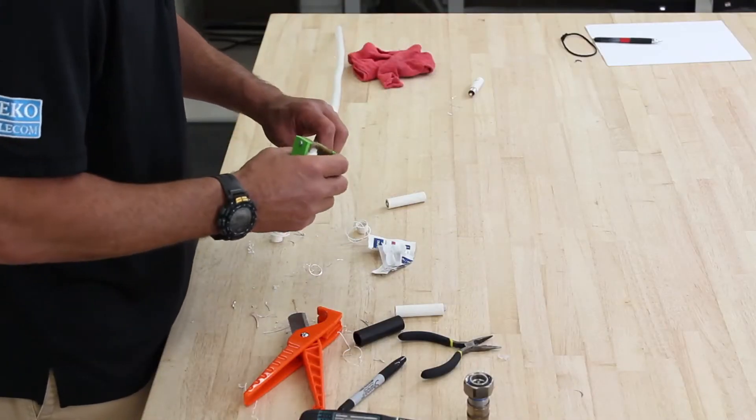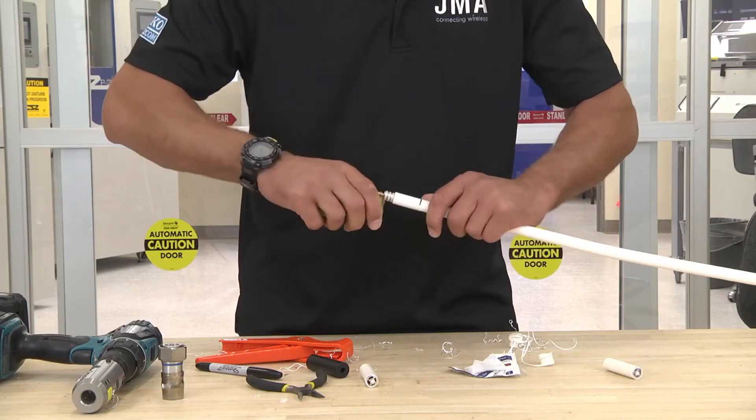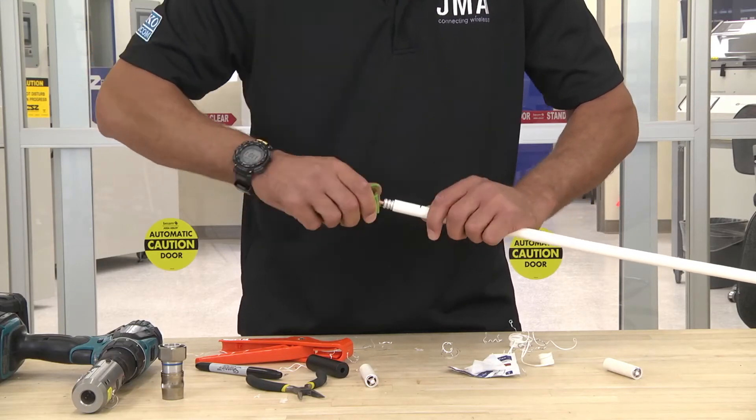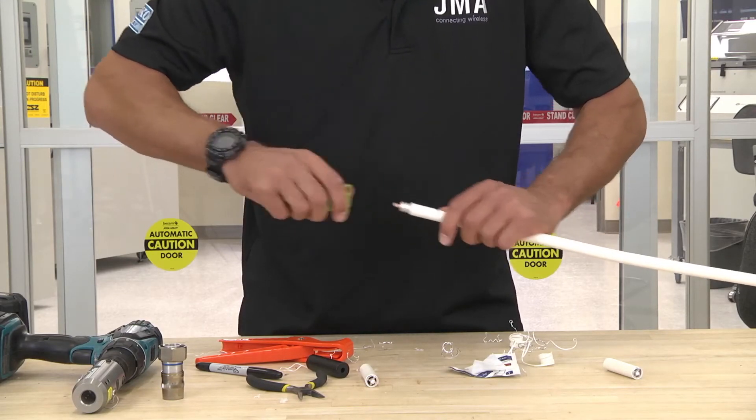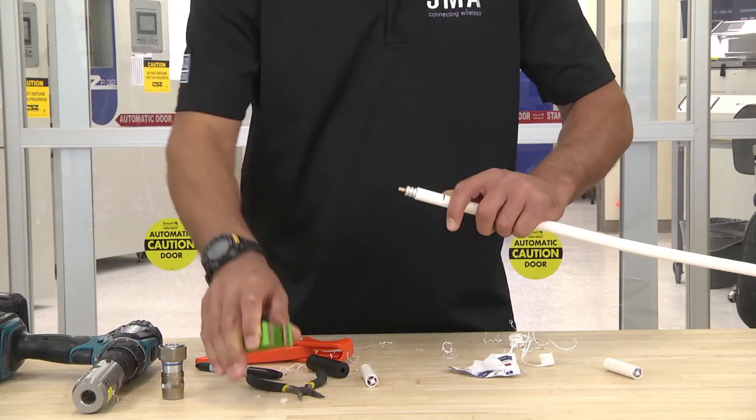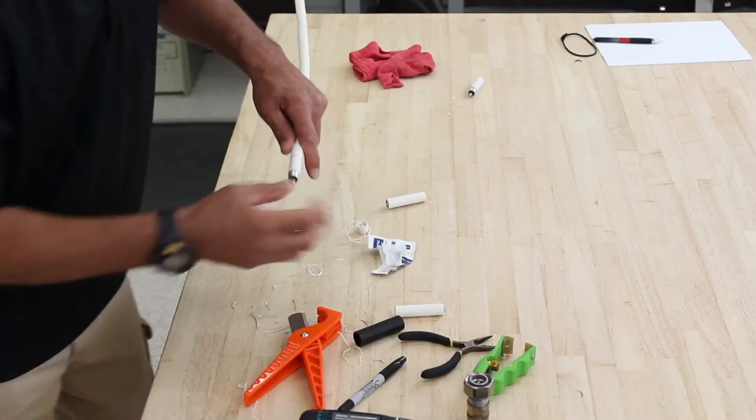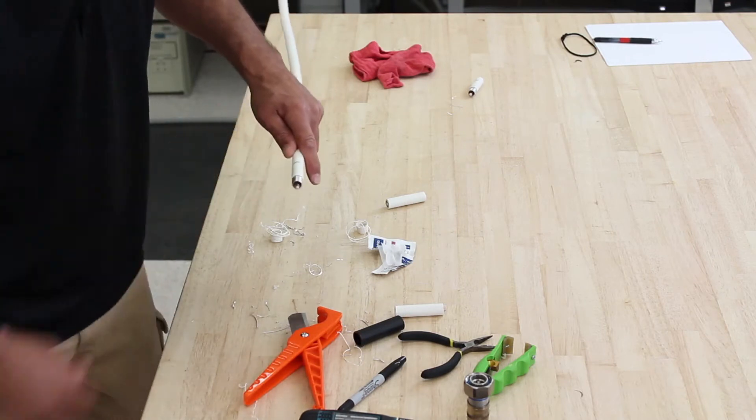So once we've prepped it, we want to take our gator tool, clean off the center conductor, and then we want to also now take the shop vac and clean out any loose debris.